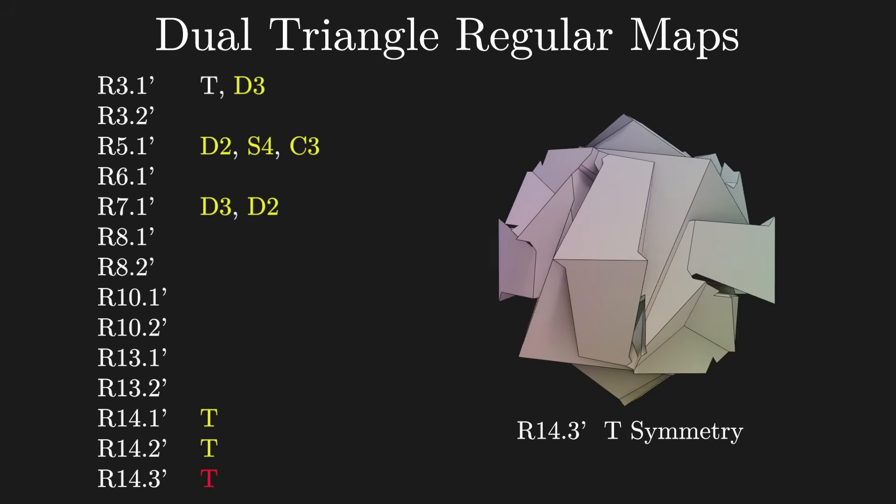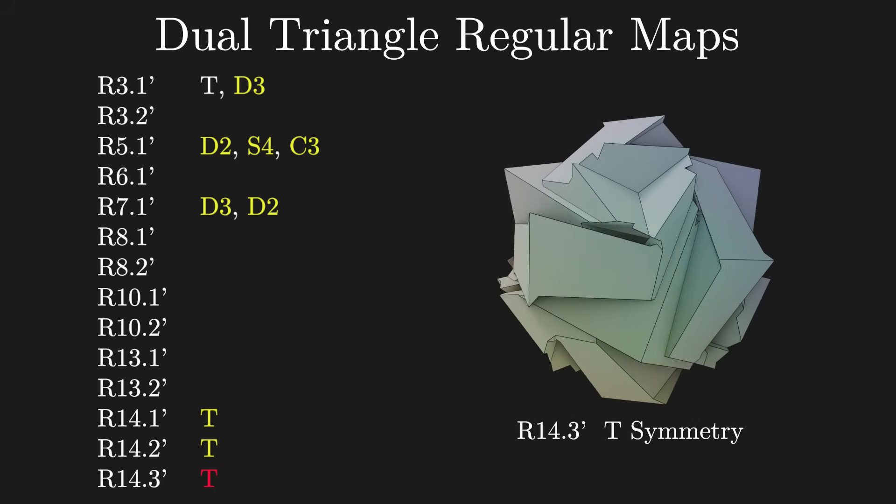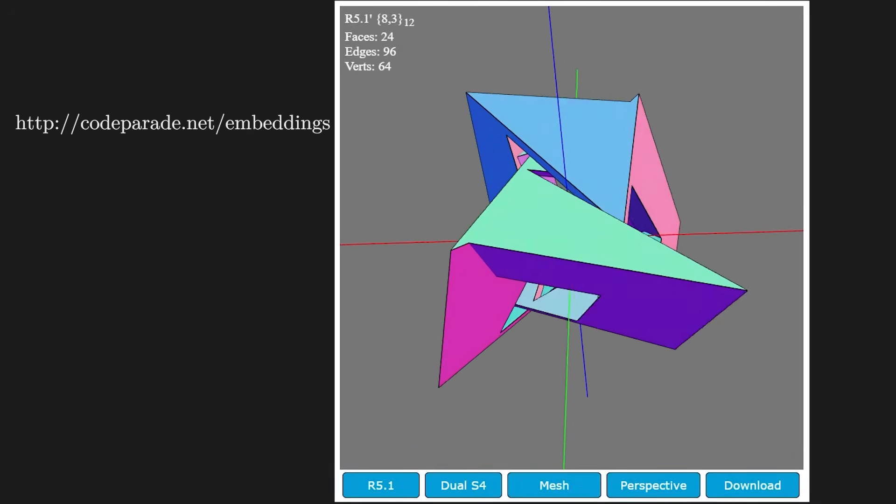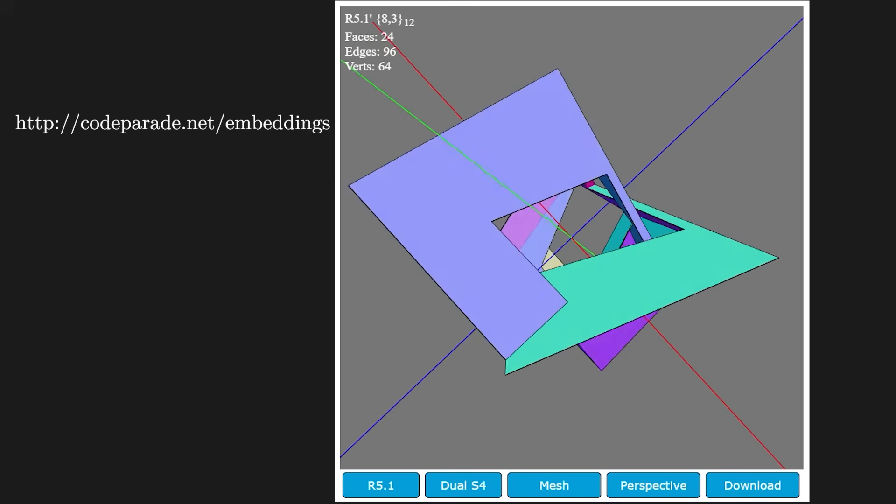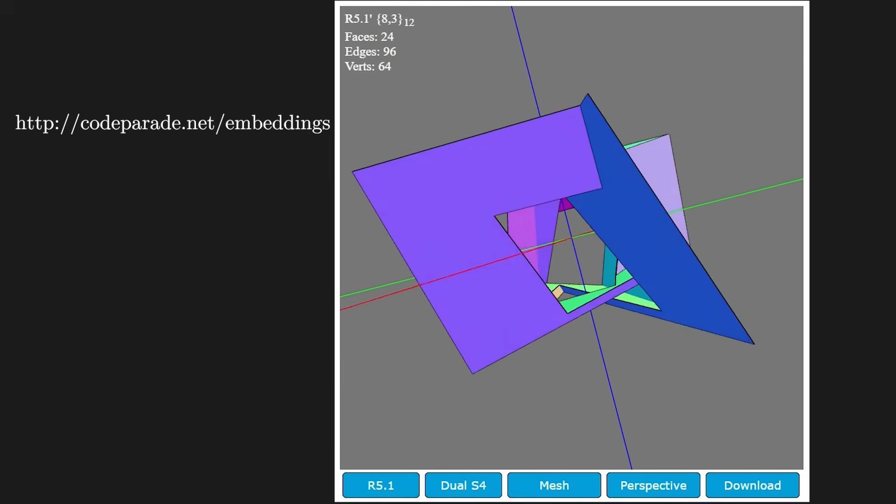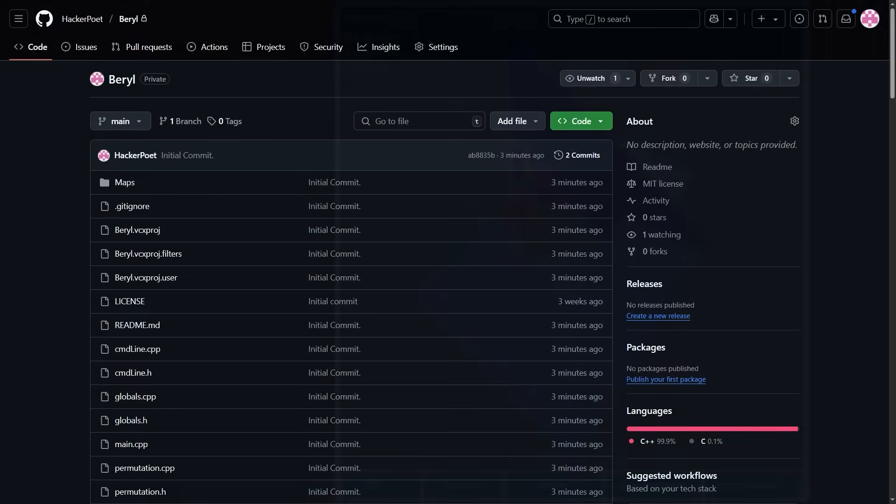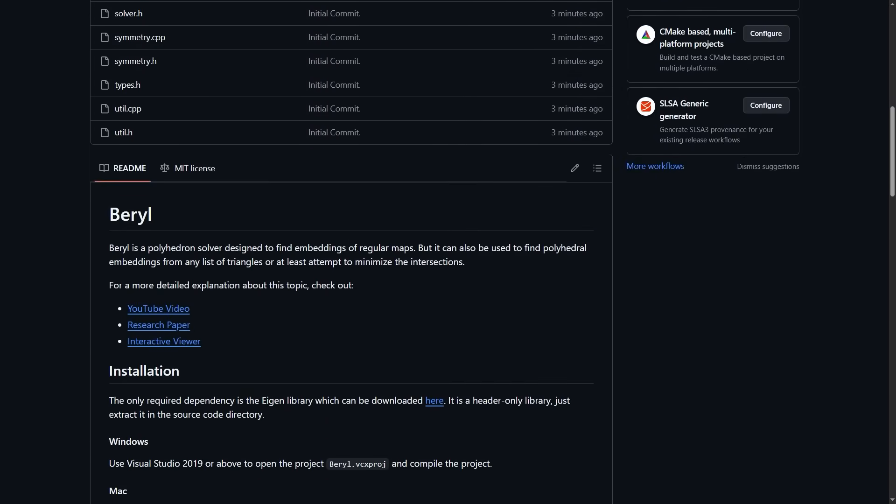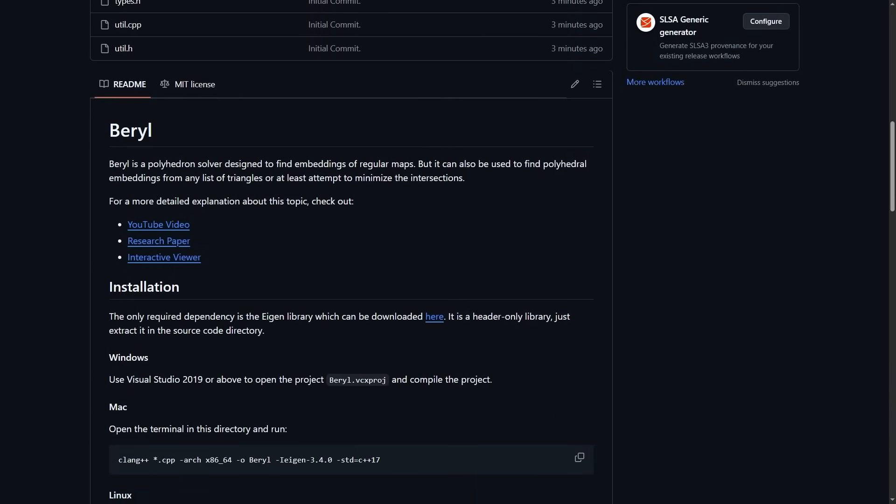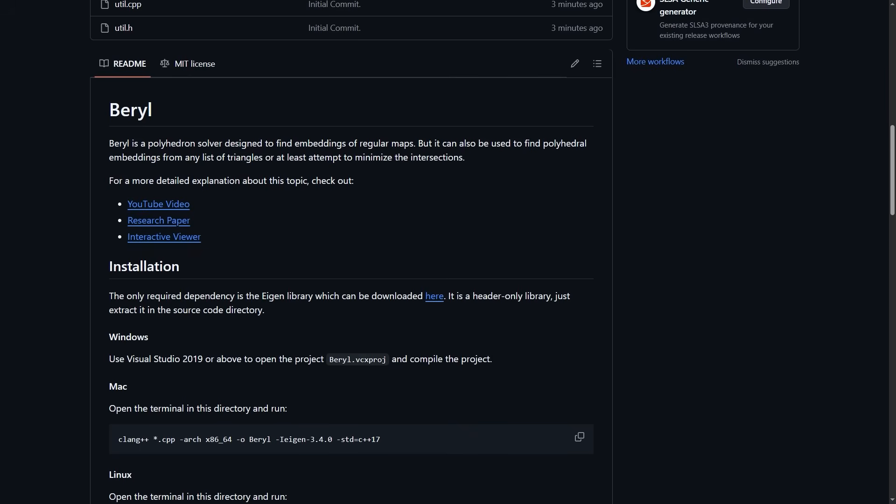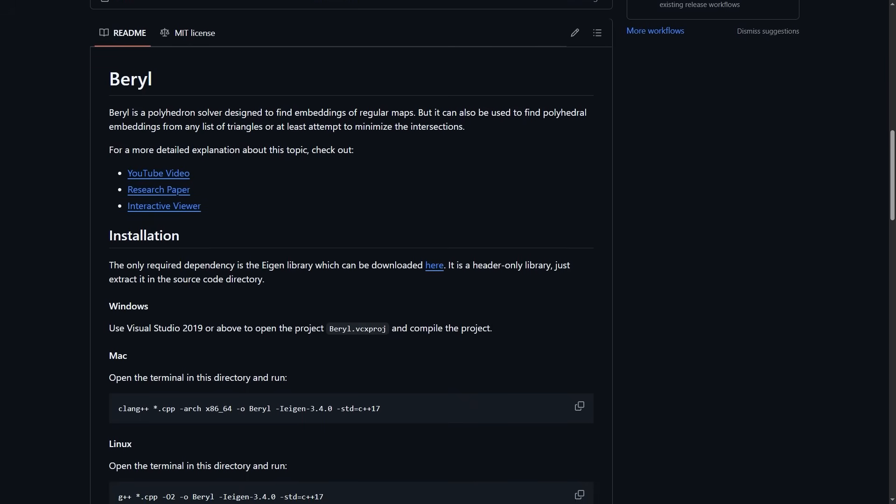Obviously, the shapes can be difficult to understand from watching the video, so I created a webpage where you can interact with them, or download the models if you want to explore them more, or try to 3D print them. I also published the source code on my GitHub, so you too could be the first to discover some new embeddings. I included most maps up to genus 100, so there's a lot I haven't even looked at yet.